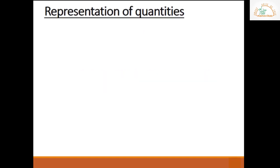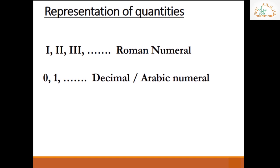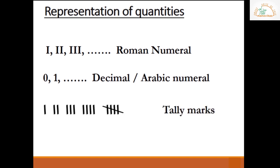In our daily life we use number systems to represent different numbers. For example, sometimes we represent the number of students in a class, the number of computers in a school, or the number of people who are infected with a virus. But the way we represent numbers may vary — some people use Roman numerals, some use the decimal system, and some use tally marks.